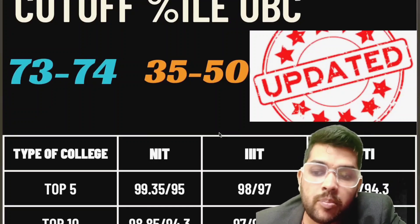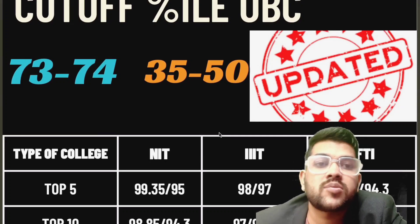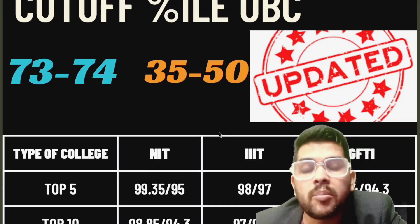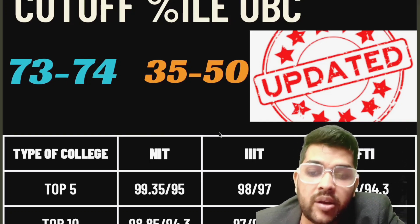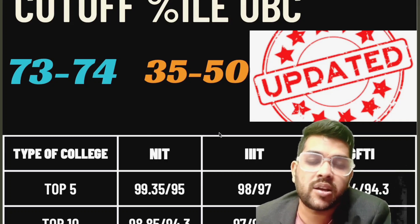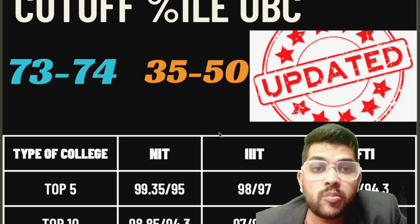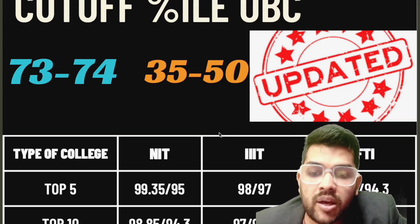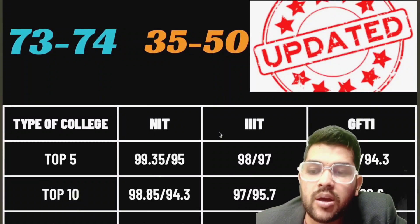For college cutoffs (OBC, other-state male): Top 5 NITs require 99.35 percentile for CSE and 95 for lower branches. For Triple ITs, 98 for CSE and 97 for lower branches — Triple IT lower branches are EC and IT since there is no Mechanical or Civil. For GFTI, 96.4 for CSE and 94.3 for lower. For top 10 NITs, 98.85 for CSE and 94.3 for lower. Triple IT: 97 for CSE, 95.7 for lower. GFTI: 94 for CSE, 90.6 for lower.